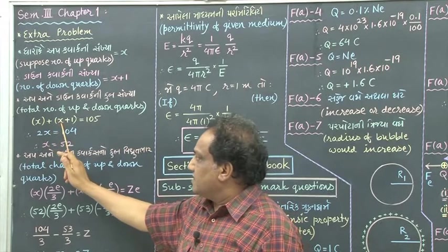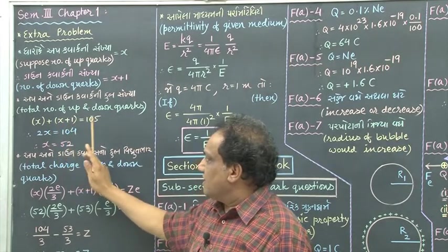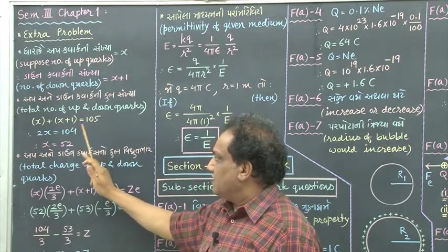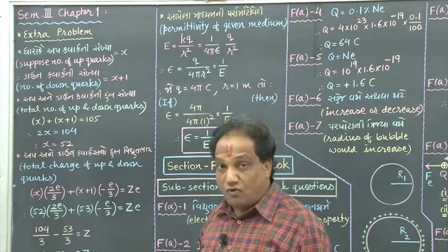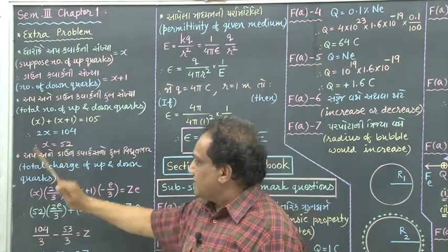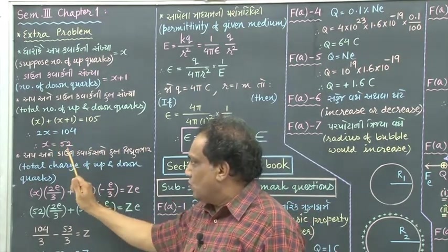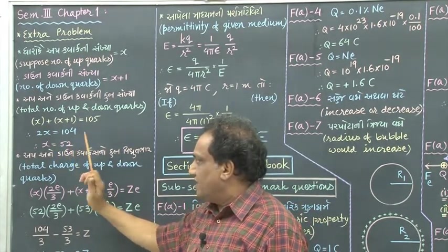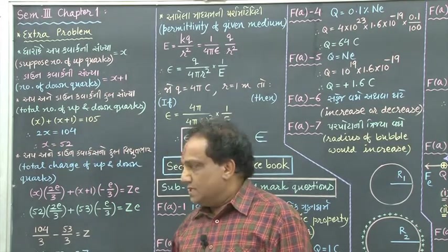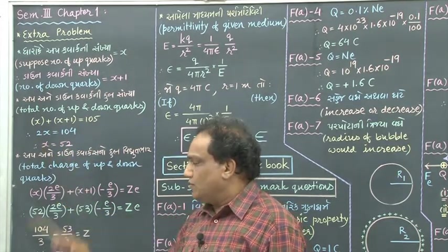x plus x is 2x. Transfer this 1 here: 105 minus 1, that is 104. Find out x — it is 104 upon 2, that is 52. So the number of up quarks is 52.